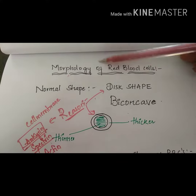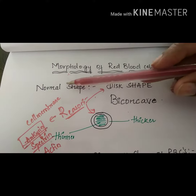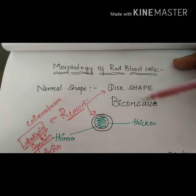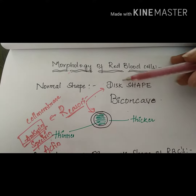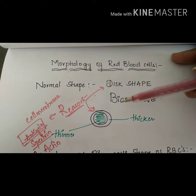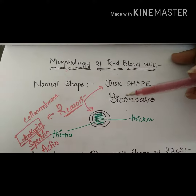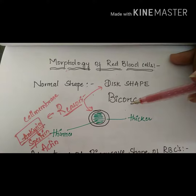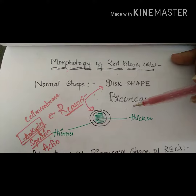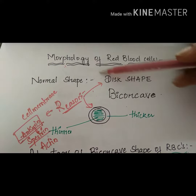Today we are going to discuss the morphology of the RBCs. RBCs have a disc shape, also described as biconcave shape. They are not round or rod shaped — RBCs have this particular disc or biconcave shape because they have to carry oxygen and carbon dioxide and pass through various capillaries without getting damaged.